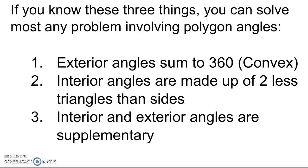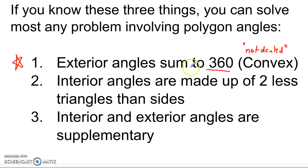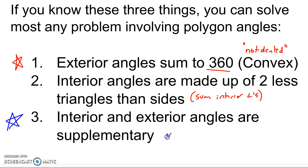So if you know these three things about polygons, you can answer pretty much any question. First, exterior angles sum to 360 degrees for any convex polygon — most polygons you'll encounter, and very handy because it works for all of them. Second, interior angles are made up of two fewer triangles than sides: subtract two from the number of sides to get the number of triangles, then multiply by 180 to get the sum of interior angles — or go backwards to find the number of sides. Third, interior and exterior angles are supplementary — this is the bridge that lets you move easily between interior and exterior angle problems.